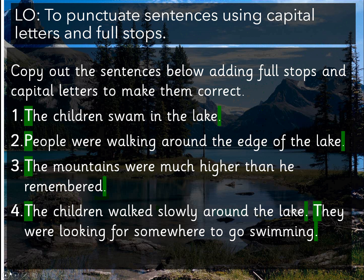The last one is a bit tricky because there are actually two sentences: 'The children walked slowly around the lake.' That's the first sentence, and then 'They were looking for somewhere to go swimming.' Second sentence. You could have put a conjunction here — 'The children walked slowly around the lake and they were looking for somewhere to go swimming' or 'because they were looking for somewhere to go swimming.' Because we haven't, it's two separate sentences.